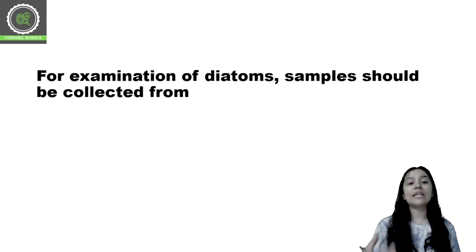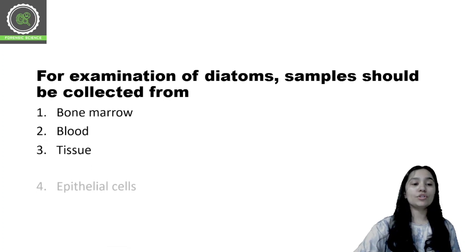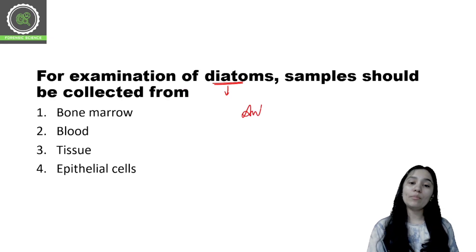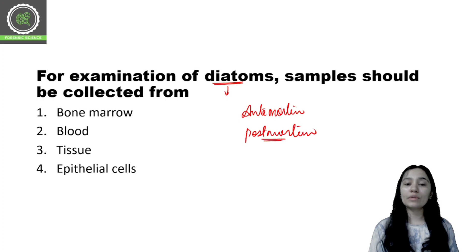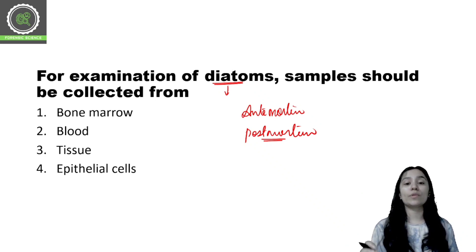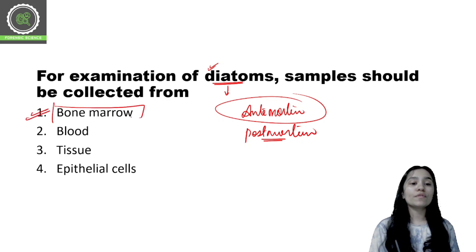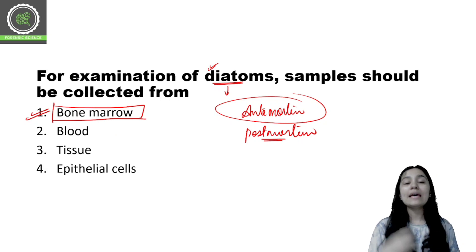Question number 4: For examination of diatoms, samples should be collected from — bone marrow, blood, tissues, or epithelial cells? Diatoms are microscopic structures that help identify antemortem drowning versus postmortem drowning. Postmortem drowning means death occurred first and then the dead body entered the water, whereas antemortem drowning means the person was alive when they entered the water and died due to drowning. In antemortem drowning, diatoms are found in the body, and we usually collect bone marrow as the sample — we can also take lung tissue. Option 1, bone marrow, is your correct answer.